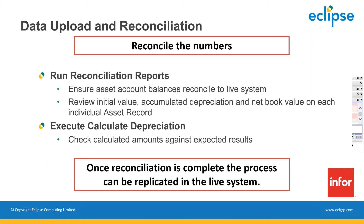Once the reconciliation and checking process has been completed in the test business unit, we can copy the setup into the live system. Static data records can be re-uploaded from Q&A Vision using the same templates, or in Sun 5 and Sun 6, you can use Transferdesk to quickly transfer records across between business units. The fundamental thing about Fixed Assets is making sure you go through the steps in the right sequence and checking results at each step. That's enough theory — let's jump into the system demonstration.